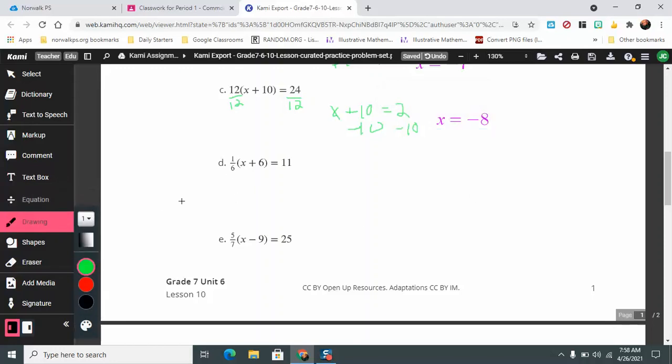With this one, with a fraction, we can think about it as dividing by one-sixth on both sides, but when we have a fraction, it's often easier to just think about multiplying by the reciprocal of that fraction. We're going to multiply 6 on both sides. That's going to give us x plus 6, because that's what's in parentheses, and that's going to equal 11 times 6, which is 66. That means that x is going to equal 60 for this case.